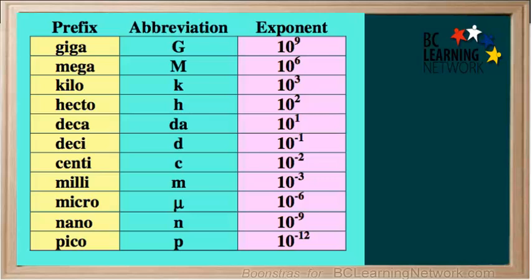Some of these are fairly familiar: Giga, Mega, Kilo, Centi, Milli, Micro, Nano. The other ones are less common but still necessary for completeness.